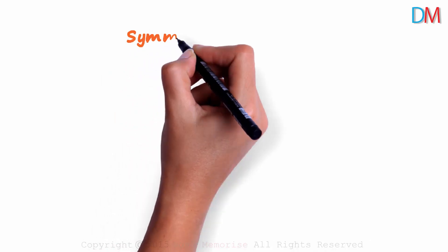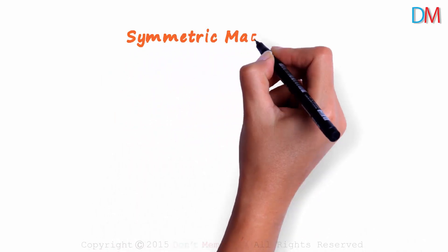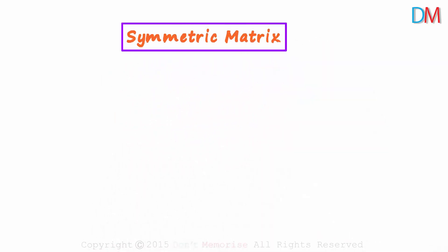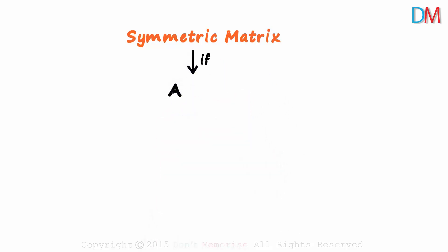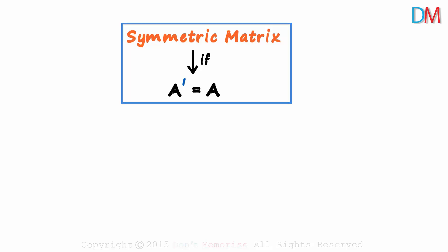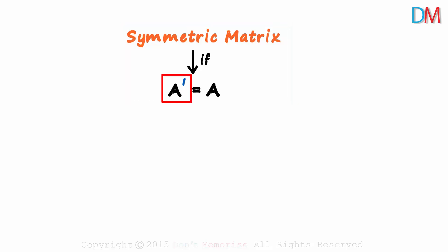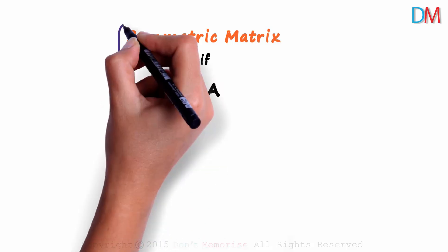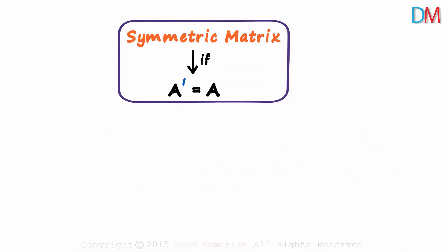In this video, we will learn something called a symmetric matrix. When can we say that a matrix is symmetric? Matrix A is symmetric if A transpose is equal to A. The transpose of the matrix is equal to the matrix itself. This is the definition of a symmetric matrix.